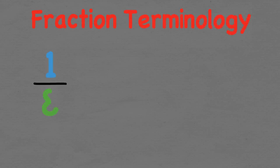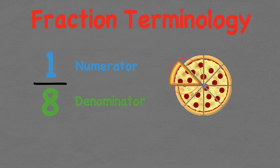Let's look at some terminology that is going to help us solve problems further in the video. Fractions consist of a numerator — the top number — and the denominator — the bottom number. The numerator shows the number of parts indicated by the denominator that we are taking. So if we have one over eight, we are taking one part from the eight. If you look at the pizza, we are taking one slice from the eight slices, whereas two over eight means we are taking two pieces of pizza.